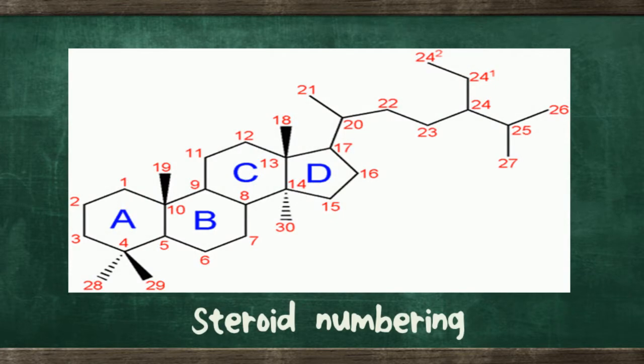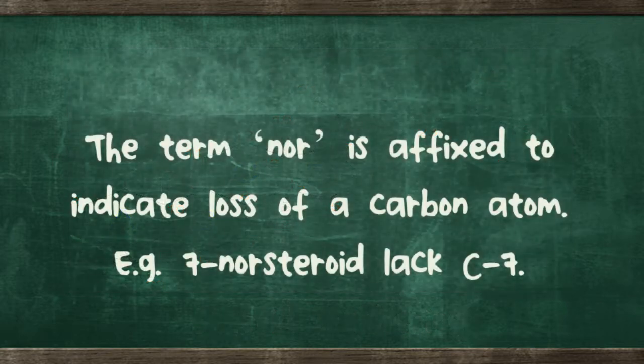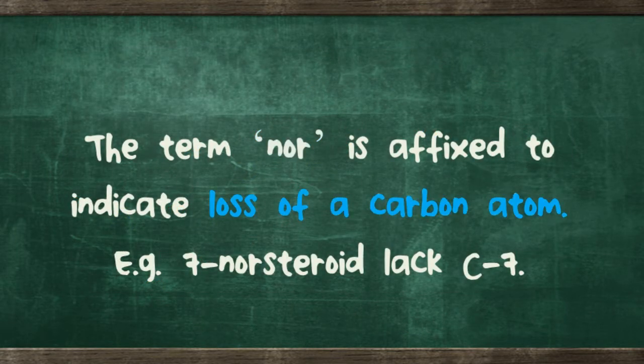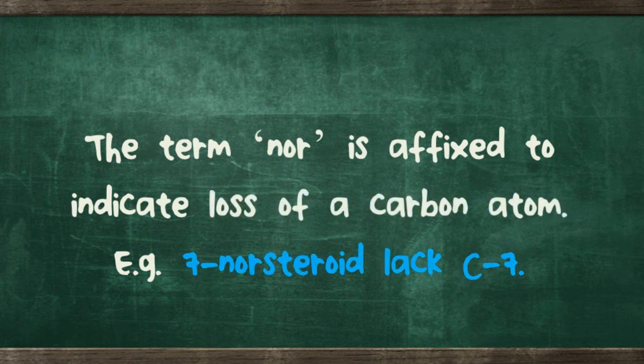This figure shows steroid numbering. The term 'nor' is affixed to indicate the loss of a carbon atom. For example, a 7-nor steroid lacks the carbon at position number 7.